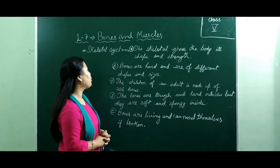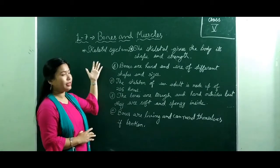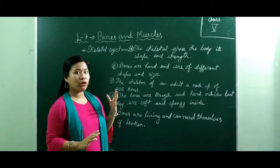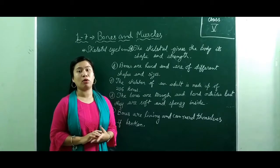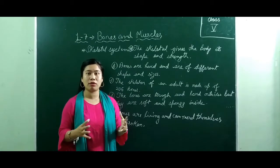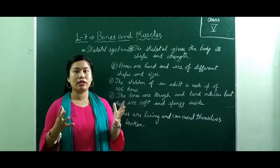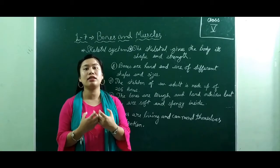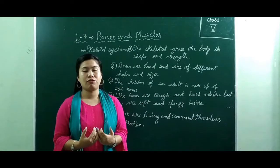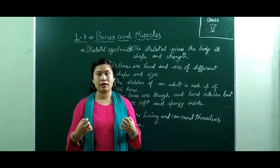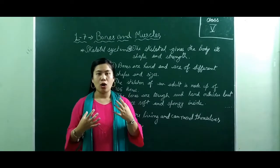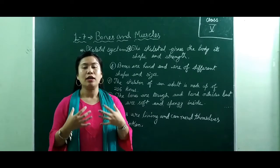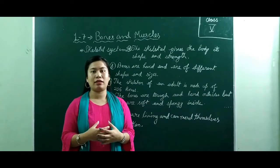Let's start with the skeletal system. The main organs of the skeletal system are the bones. The bones give shape to our body and protect the internal organs — like the brain, heart, and lungs. All the soft internal organs of our body are protected by the bones.